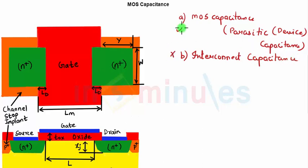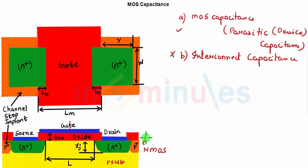To understand the parasitic capacitance, we need to look at the top view of an NMOS or PMOS. This is the cross-sectional view of an NMOS showing the P-substrate, N-type source and drain diffusion, gate oxide thickness, and gate. The P-plus regions are channel stop implants — when two NMOS devices share the same substrate, an unwanted channel could form between them, so channel stop implants are used to prevent that.